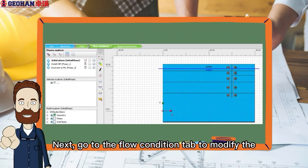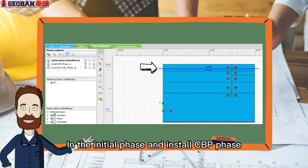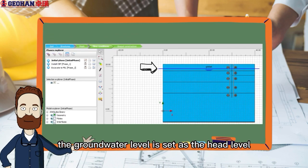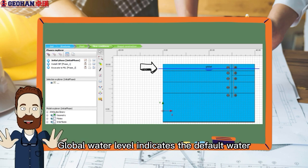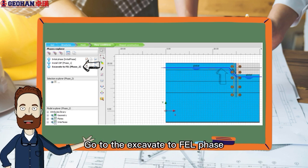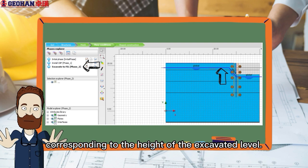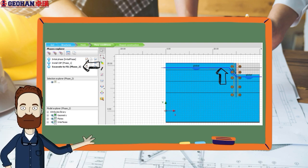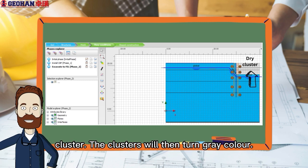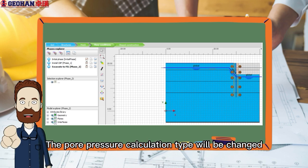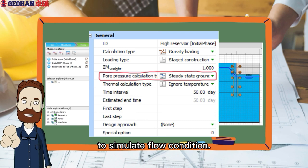Next, go to the Flow Condition tab to modify the groundwater level. In the initial phase and install CBP phase, the groundwater level is set as the head level in the Create Borehole step. Global water level indicates the default water level for all clusters. Go to the Excavate to FL phase. Draw a new groundwater level corresponding to the height of the excavated level. Then, the first and second excavated clusters are set as Dry Cluster. The pore pressure calculation type will be changed to Steady State Groundwater Flow to simulate flow condition.